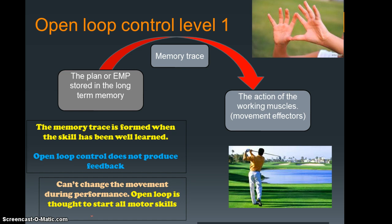Open loop is thought to start all motor programs. And if you think about that, it makes sense. Everybody has an initial action, and then after that, depending on what the skill is, you will have some kind of kinesthesis or feedback. Initially, you have this open loop as a movement of some kind that you don't really need to think about.